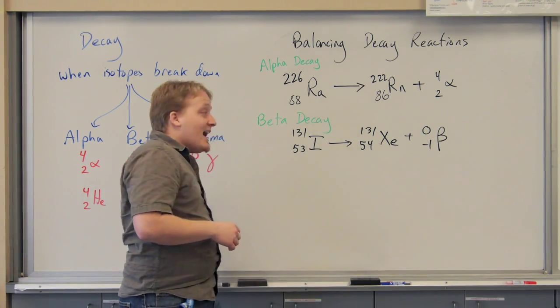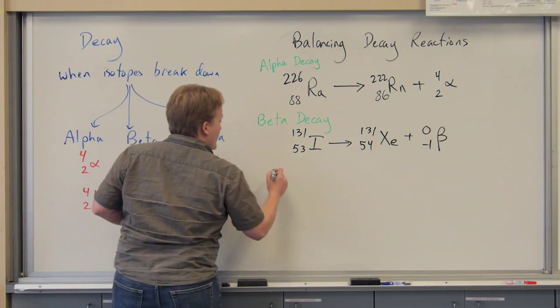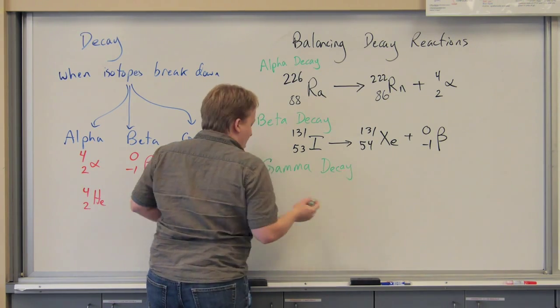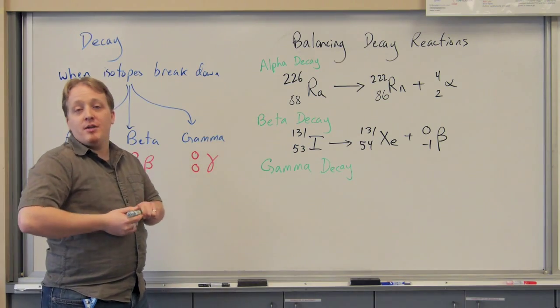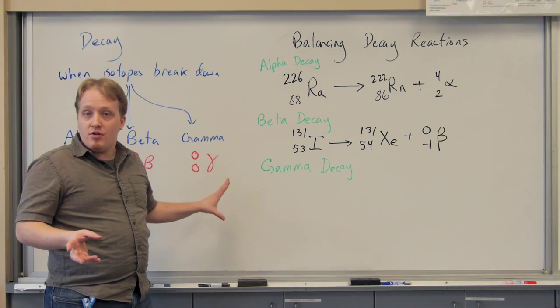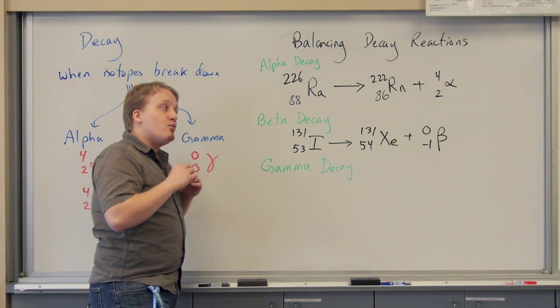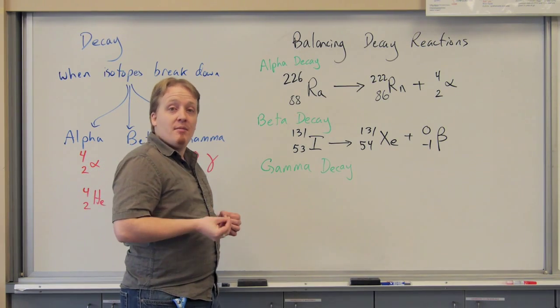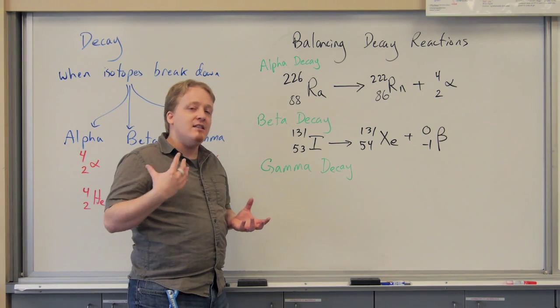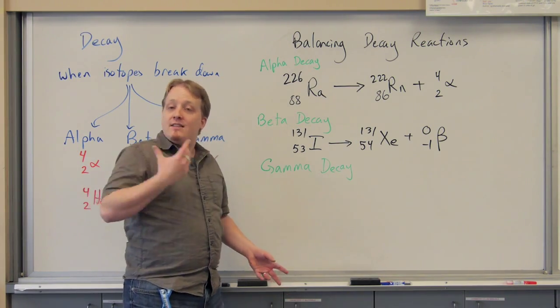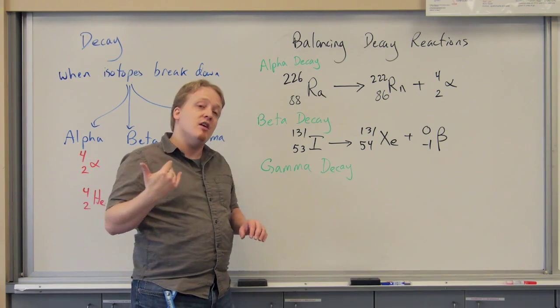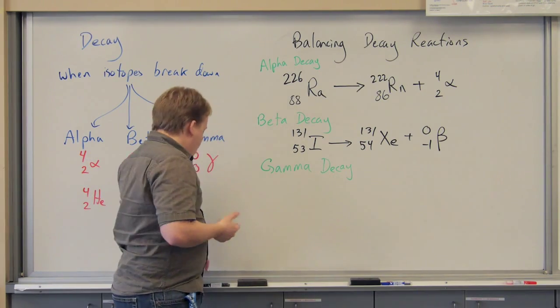Now, our last decay form is gamma decay. Now, gamma decay is not actually a particle. Gamma rays, if you've heard of those from the electromagnetic spectrum, is this type of radiation. And radioisotopes, or radioactive isotopes that produce gamma decay, don't actually change their nuclear structure, but they spontaneously give off a gamma ray as they decay, as they lose their energy. Something inside their atom reconfigures, and a gamma ray is the result. It's just a burst of energy. And what it looks like is this.